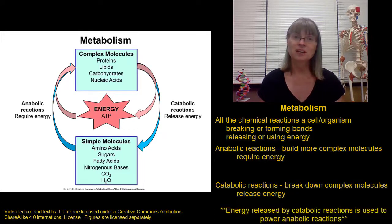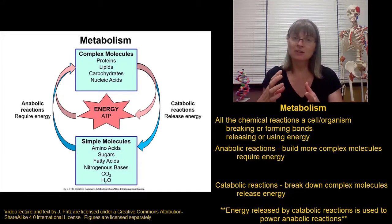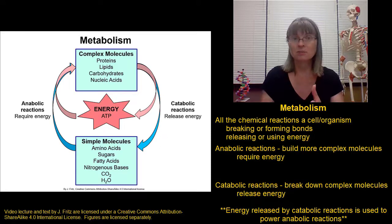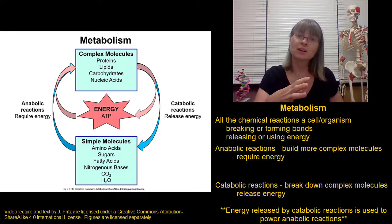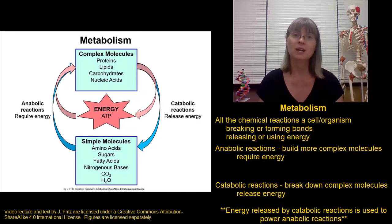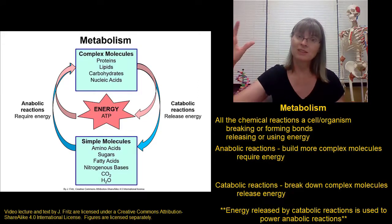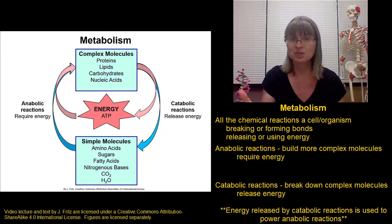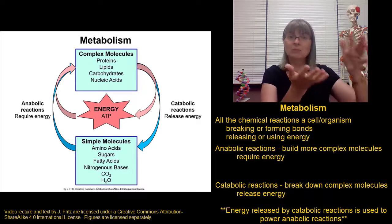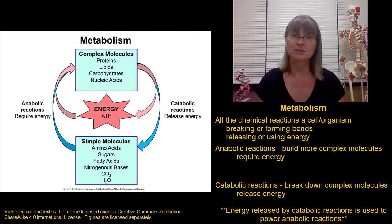This energy that's released by the catabolic reactions is used to power the anabolic reactions, and this is happening in our cells all the time. We take in a complex molecule, break it apart into smaller subunits. That releases energy. We use that energy to combine other small molecules together the way we need to build the complex molecules that we need to run our bodies. So these two types of reactions are really linked. We have to break things down to create the raw materials and to release the energy that we need to build back up into the molecules that our bodies are going to use to function.